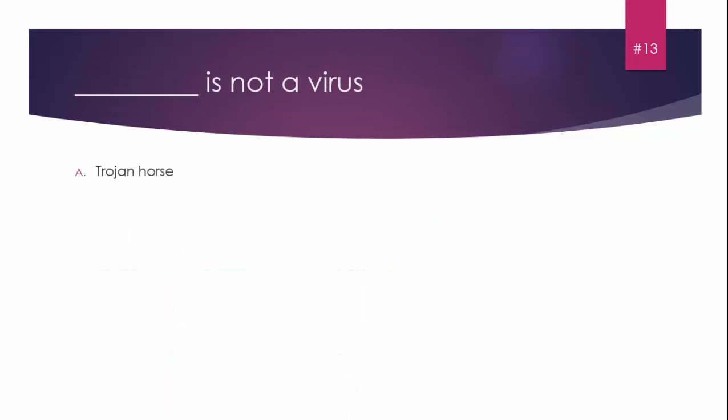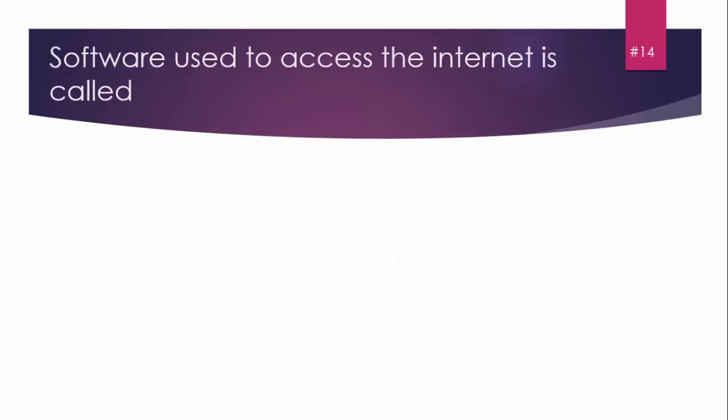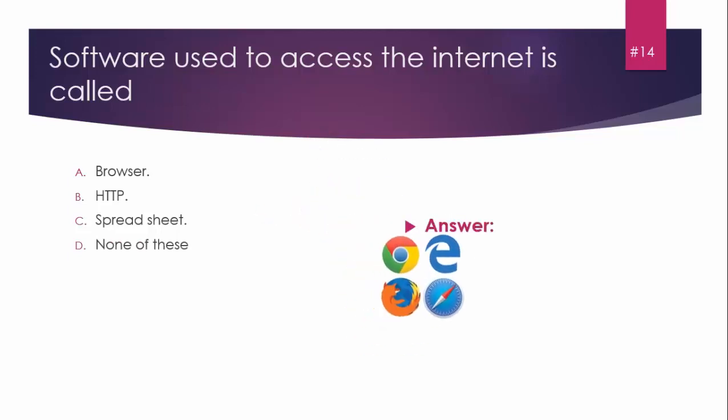MCQ number thirteen: Software used to access the internet is called: A) Browser, B) HTTP, C) Spreadsheet, D) None of these. The answer is Browser.